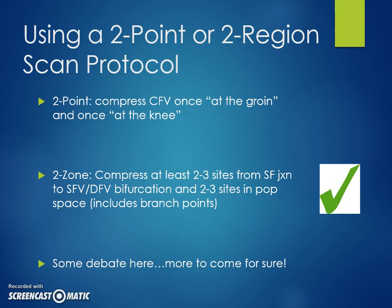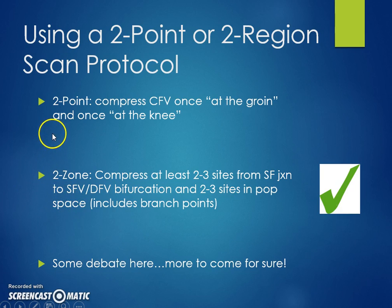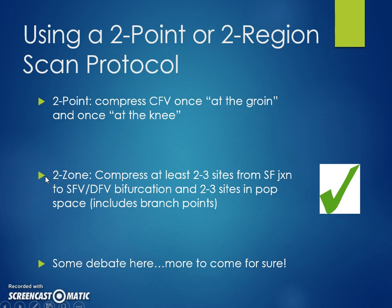Regarding two-point versus two-region protocol: rather than compressing the common femoral vein just once at the groin and the popliteal just once behind the knee, it's important to have multiple compressions — two to three sites — starting at the saphenofemoral junction and going to where the superficial and deep femoral veins bifurcate, then jumping down to the popliteal space and compressing above the knee, at the knee, and just below the knee where the popliteal vein branches.